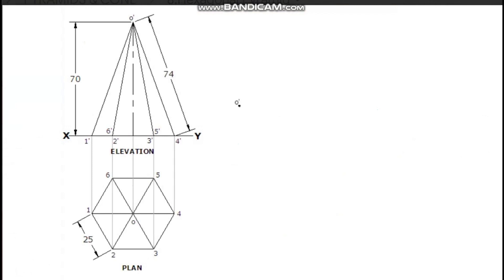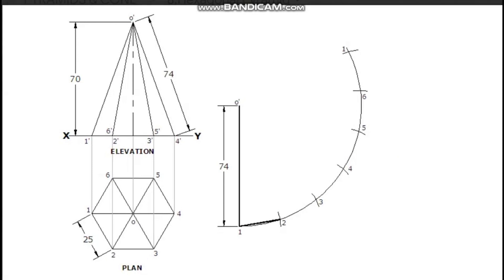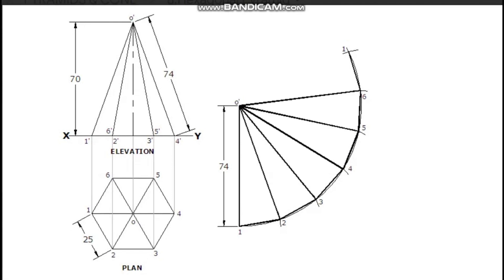Draw a line and an arc with the true length. Measure the distance of the base edge in the compass and cut consecutive points on the radial arc. A hexagon has six sides, so six points on the radial arc. Join these points with straight lines, and also join these points to the center of the arc. Finally, draw the base as a hexagon.